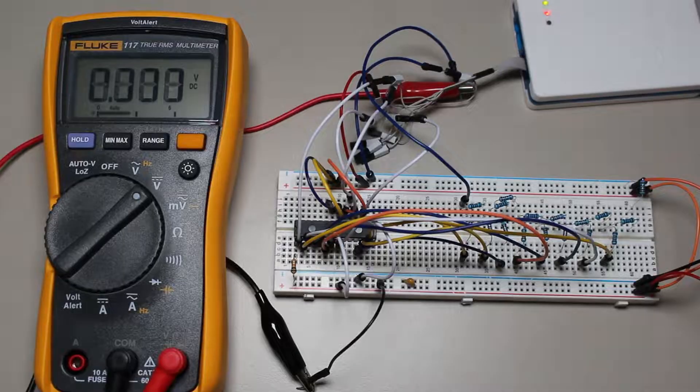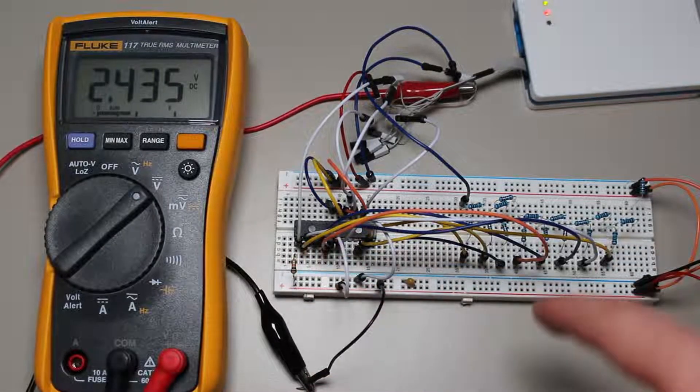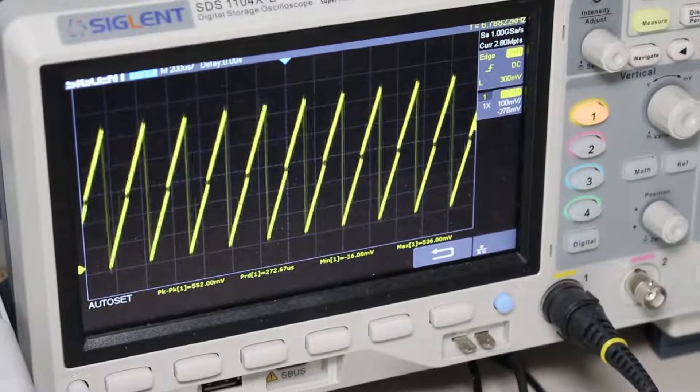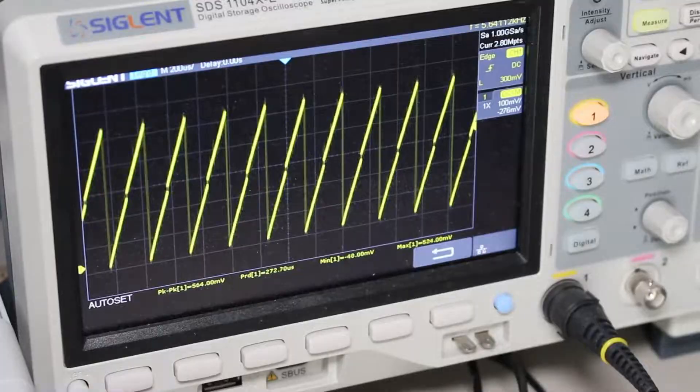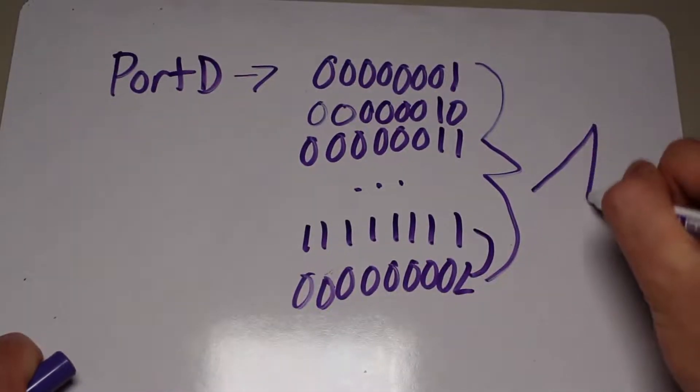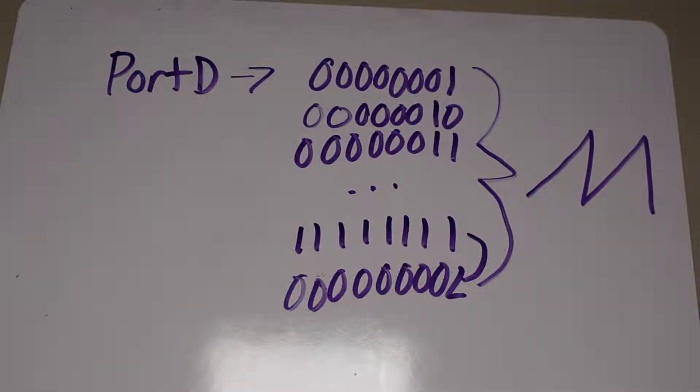Now that we have the microcontroller controlling the DAC, let's make it generate some functions for us. Starting off, I'll make the simplest function that I can think of, the ramp oscillator. To generate this, I simply just incremented port D over and over again, and the overflow causes it to come back to 0 after it reaches 255.